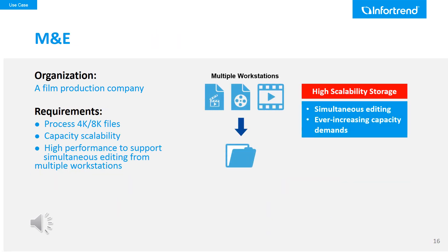Here is the EonStore CS use case for a film production company. As we mentioned, the media and entertainment industry requires high performance to support simultaneous editing from multiple workstations and capacity scalability for ever-increasing capacity demand. Thus, they chose EonStore CS as their final solution.